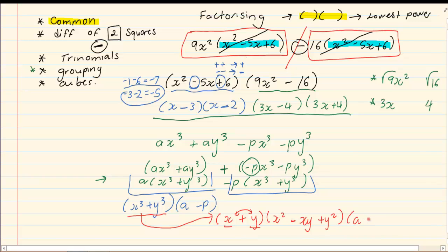We still have to put in a minus p. And now, you have completely factorized. Because, even though we have an x squared in the factorizing, x squared minus xy plus y squared cannot be factorized at this level. Thank you for watching.